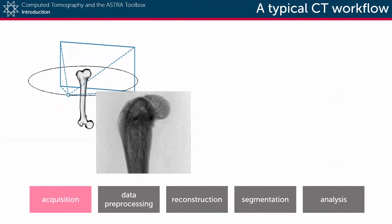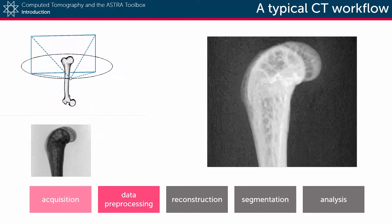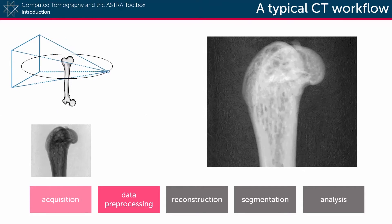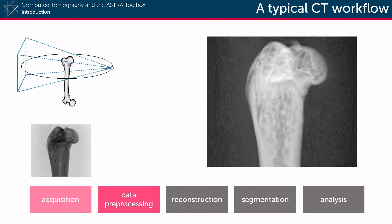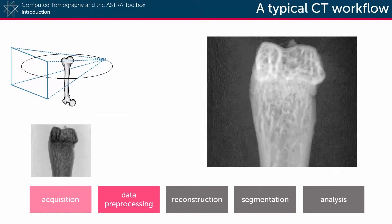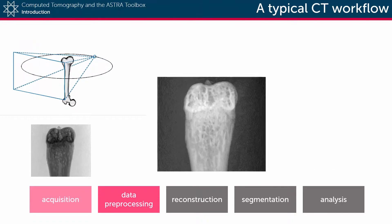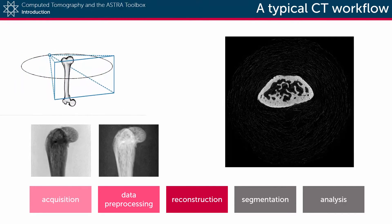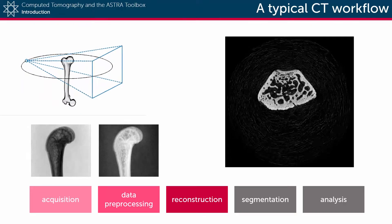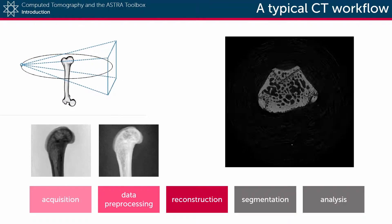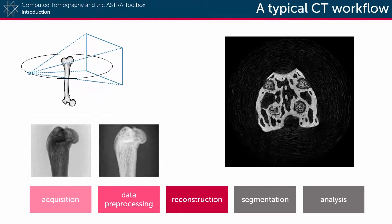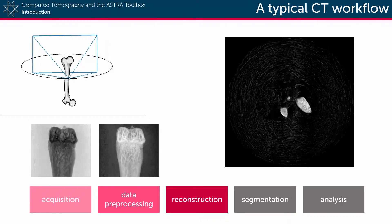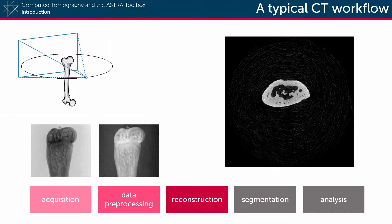Afterwards, flat field and dark field corrections are applied to clean up the data and to linearize it. A reconstruction technique then uses this information from the pre-processed data to generate reconstructed images of the scanned object, in which the value of each pixel represents the attenuation value at that specific location.